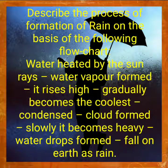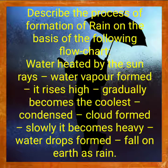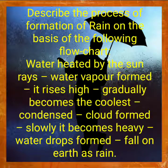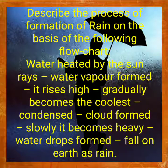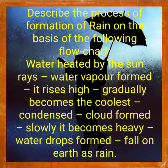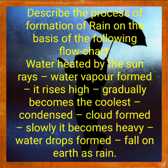Water heated by the sun rays. Water vapour formed. It rises high. Gradually becomes the coolest, condensed cloud formed. Slowly it becomes heavy. Water drops formed. Fall on earth as rain. This is the flowchart on the basis of which you have to write the processing of formation of rain.